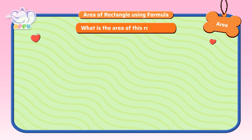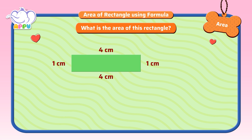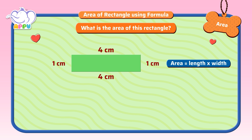What is the area of this rectangle? We know the formula to find the area of a rectangle is length times width. To find the area of a rectangle, multiply the length of the rectangle with its width. Here, the length of the rectangle is 4 cm and its width is 1 cm. So, the area is 4 cm times 1 cm, which is equal to 4 square cm.